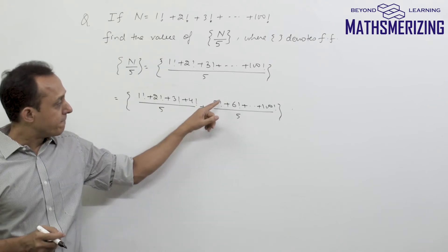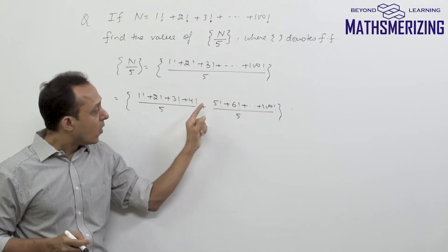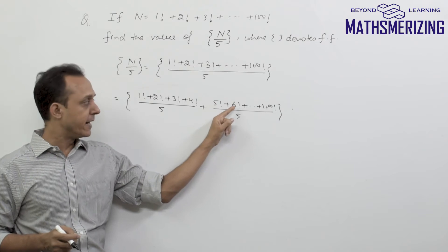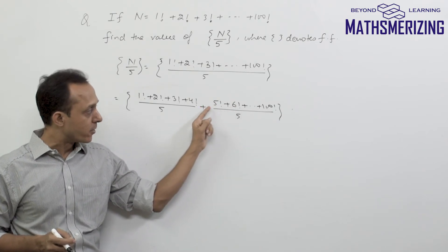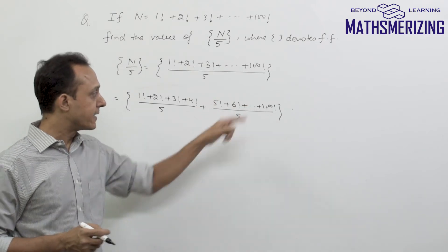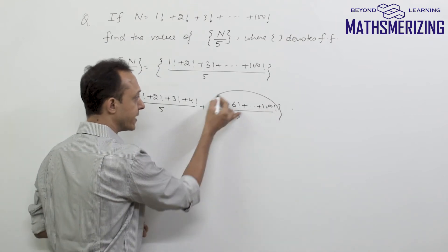Now for the second case, factorial 5, factorial 6, factorial 7, up to factorial 100, all of them will have 5 inside, right? Because it's a product of first 5 numbers, first 6 numbers, so 5 will get cancelled every time, and this expression is nothing but an integer.